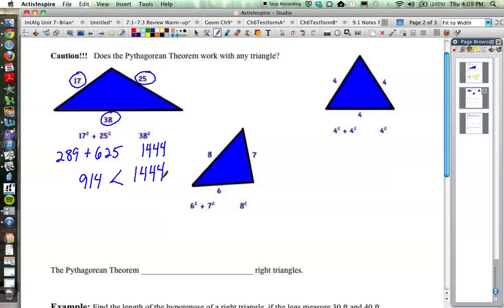Now as we move over to the equilateral triangle over here, we've got 4 squared, 4 squared, and 4 squared. There's no two shorter sides like there was on the other one and a longest side, so of course we know how this one's going to end up. But 4 squared is 16, and 4 squared is 16, and 4 squared again is 16. 16 plus 16 is 32, and of course 32 is greater than 16.